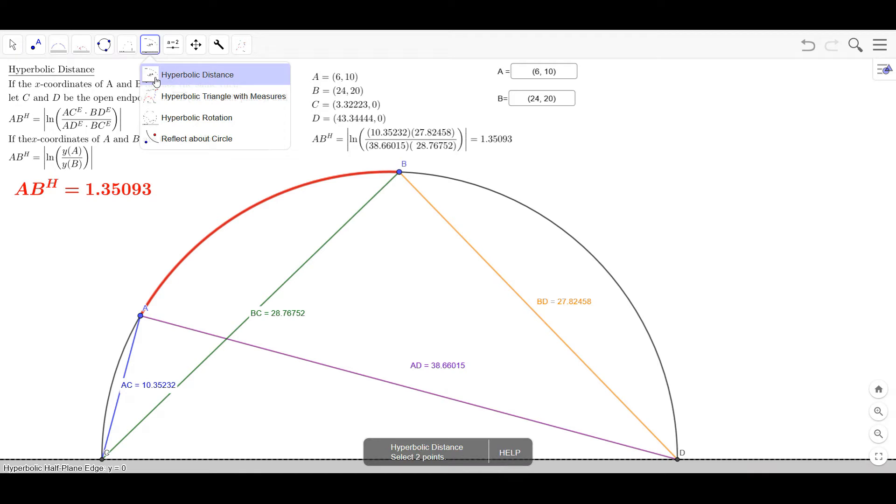Including a hyperbolic distance which you just click on and then click on two points here and it will show the hyperbolic distance, which is where this right here came from.